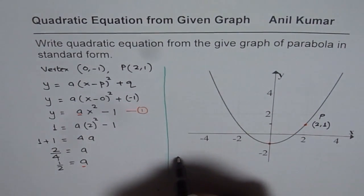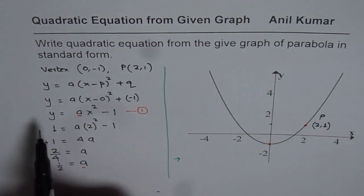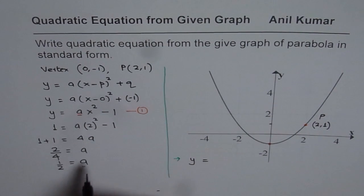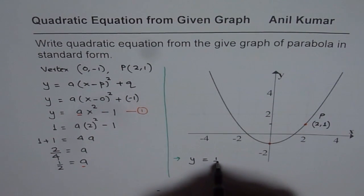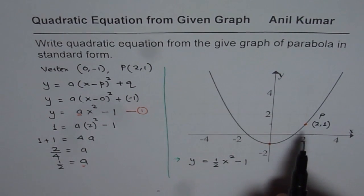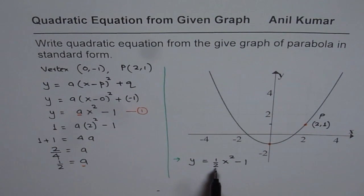We will continue here. So we have y = (1/2)x² - 1, and that is also the equation in standard form. The parabola given to us is y = (1/2)x² - 1.